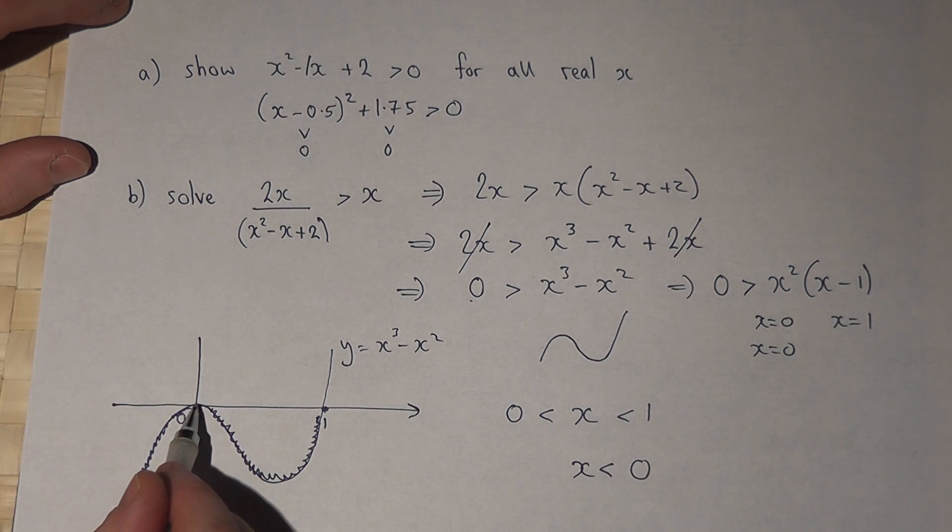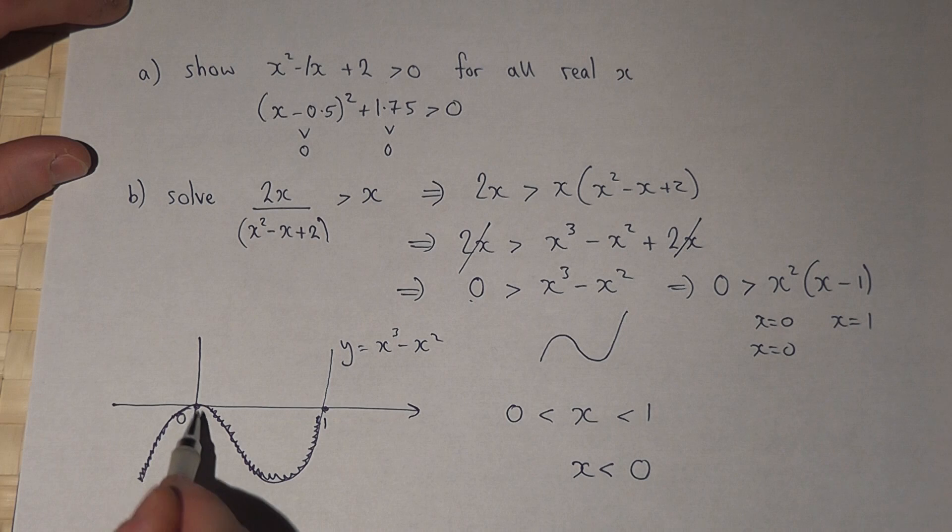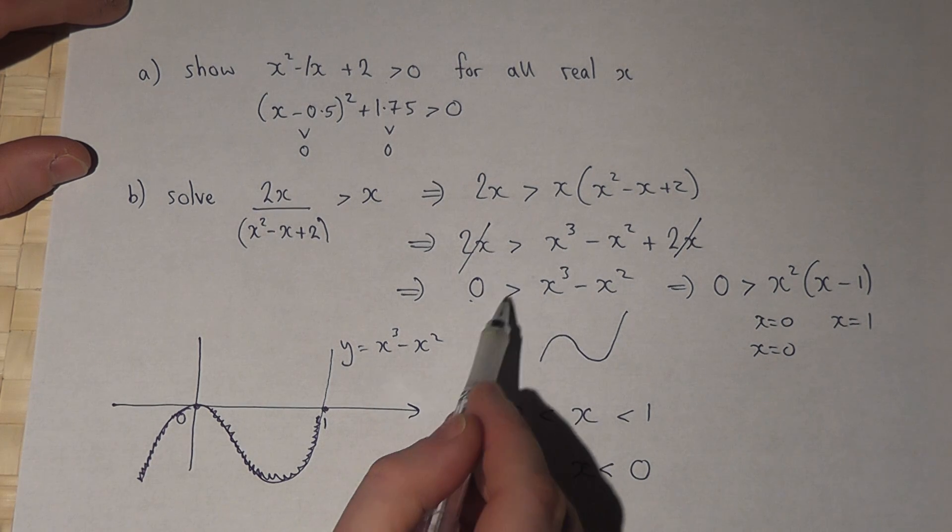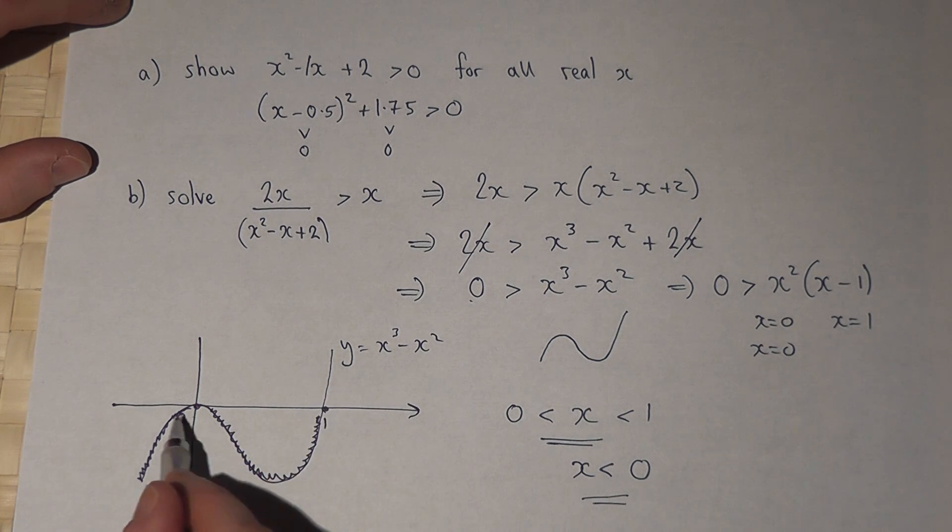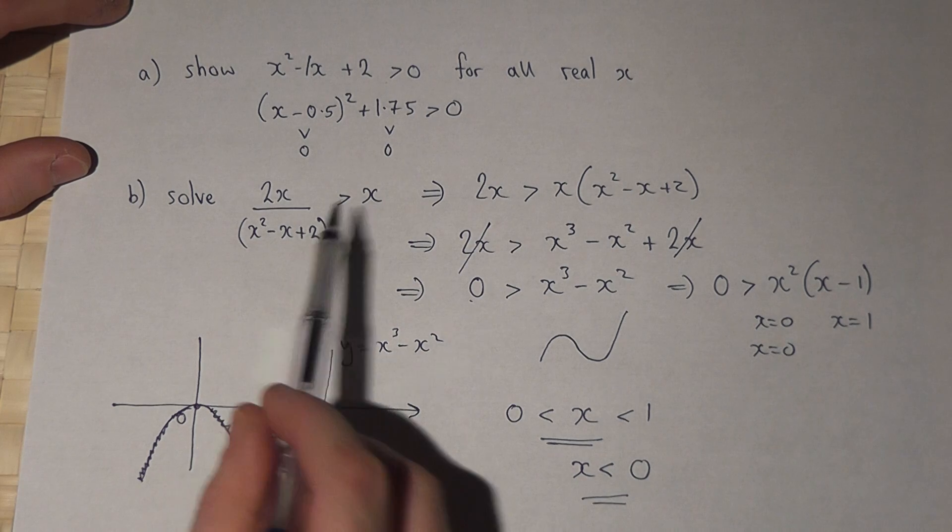We can't include 0 itself because that is where the graph equals 0 and this is a strict inequality. So for these values of x, the graph is below the axis and this, therefore, solves the original inequality.